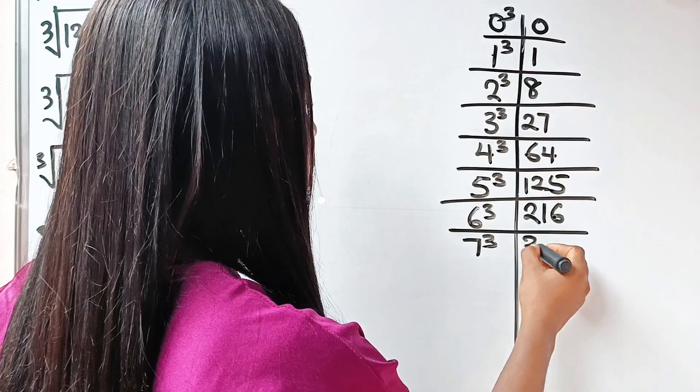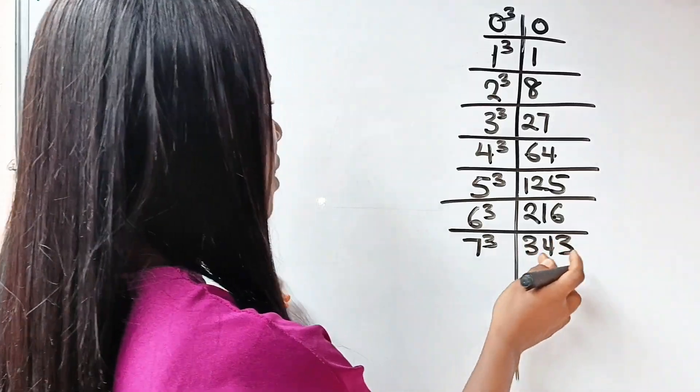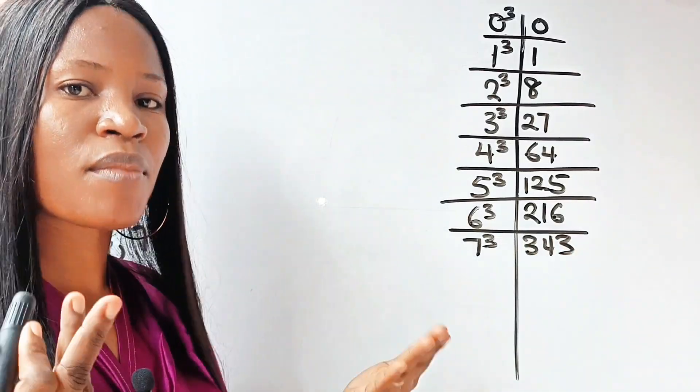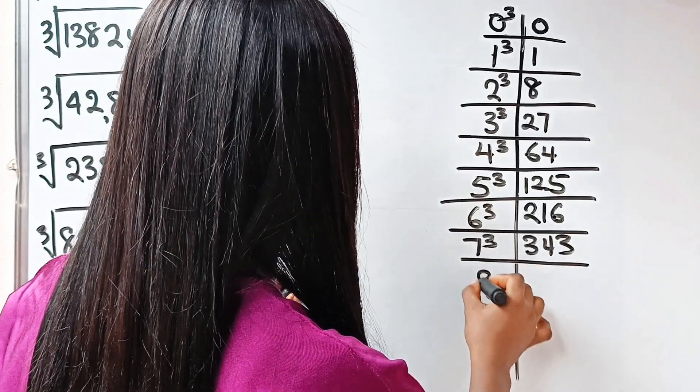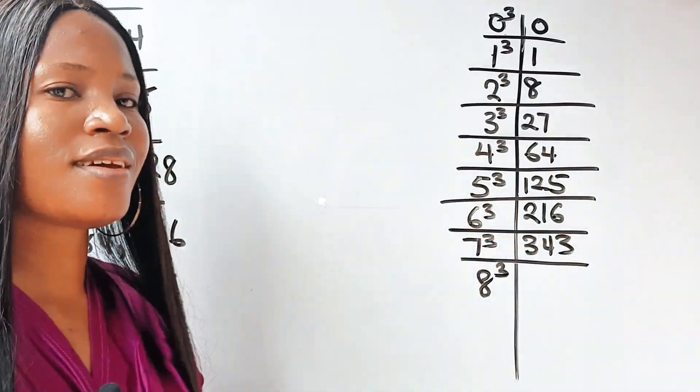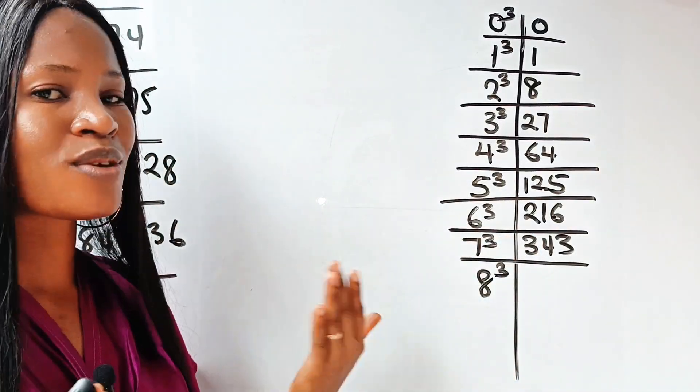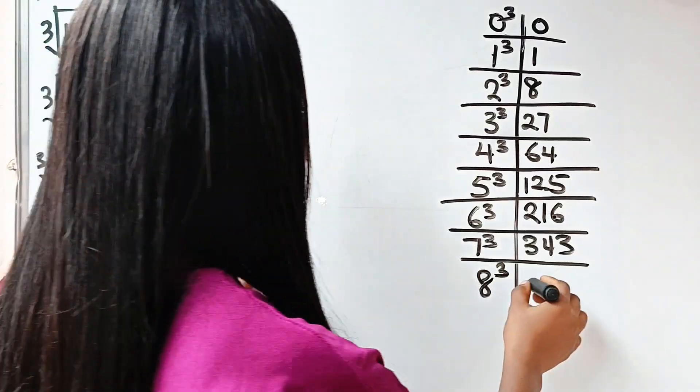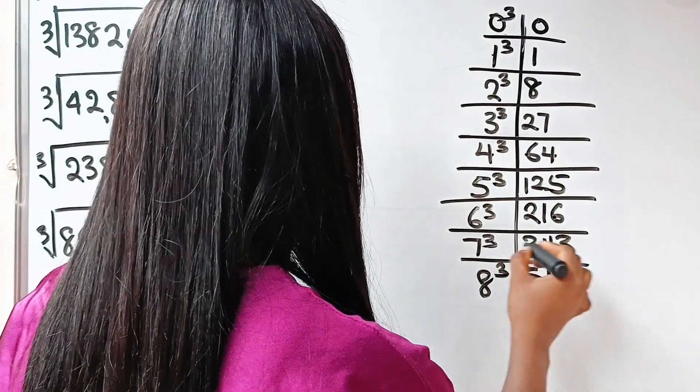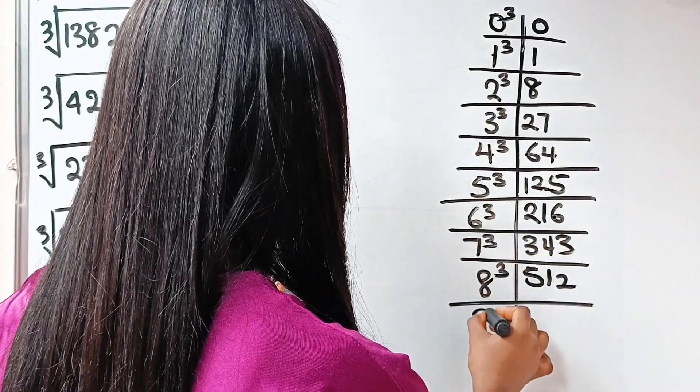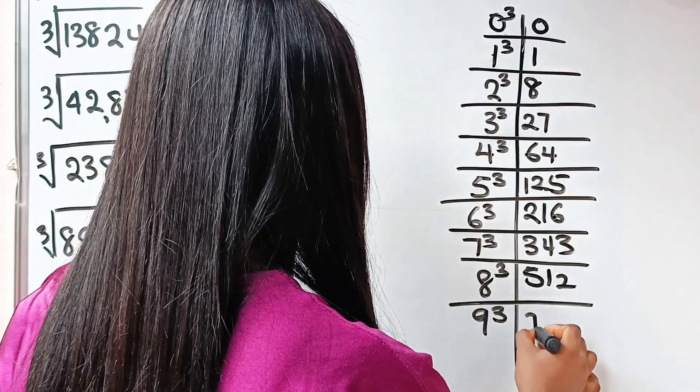7 cubed is 343. 7 cubed is 343, it starts 343. You can see how I'm able to memorize it. Now, 8 cubed doesn't have any pattern for me. I just know that it's 512. And 9 cubed is 729.